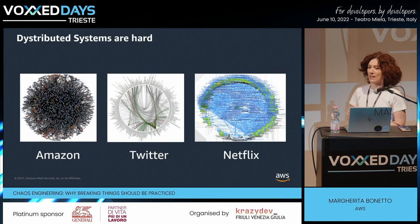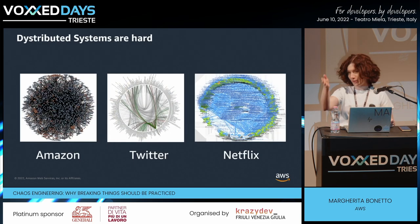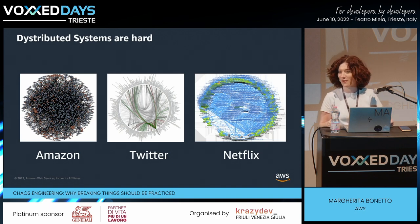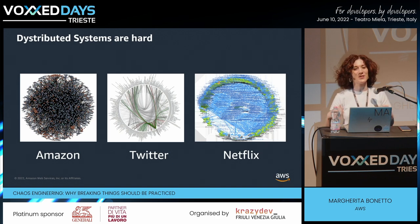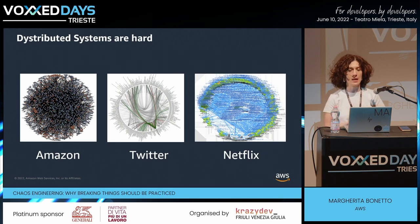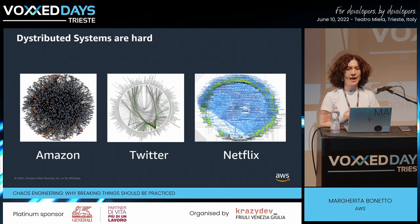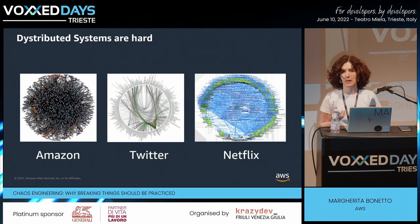This talk is about checking, preventing, and understanding how to properly behave when things go wrong. Distributed systems, microservice systems — something very popular and a state-of-the-art approach for infrastructure and applications. But they are hard. They are complex.